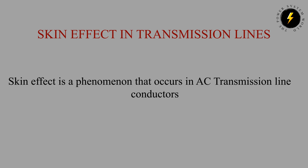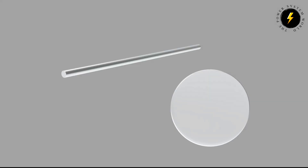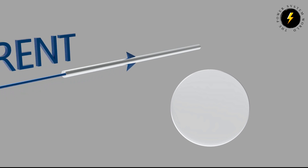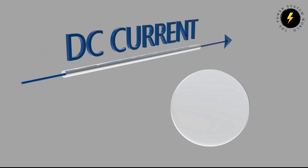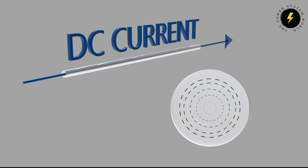Skin effect is a phenomenon that occurs in AC transmission line conductors. For example, when DC current flows through a solid conductor, the current is distributed uniformly throughout the entire cross-section of the conductor.